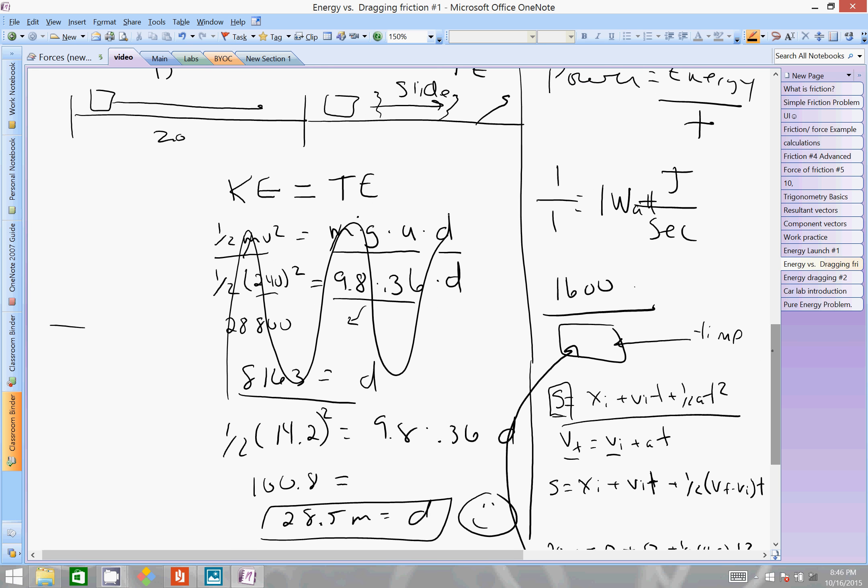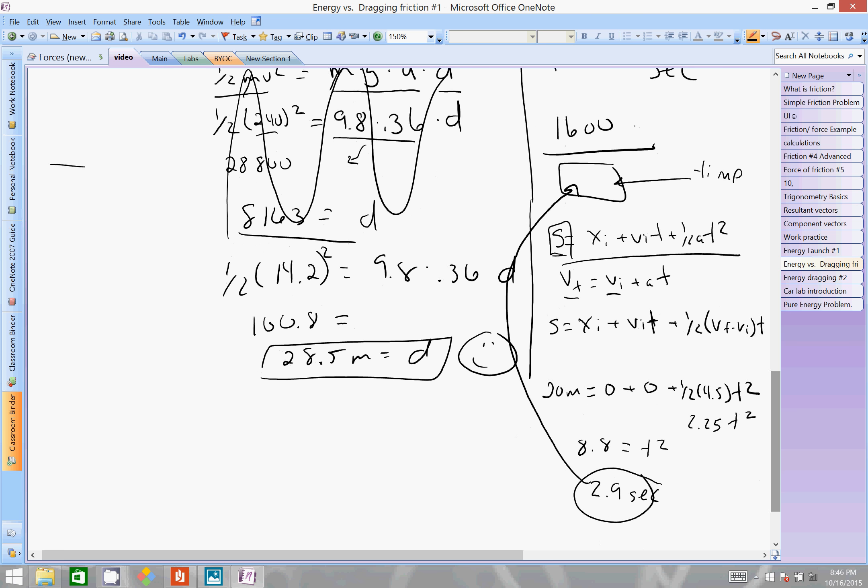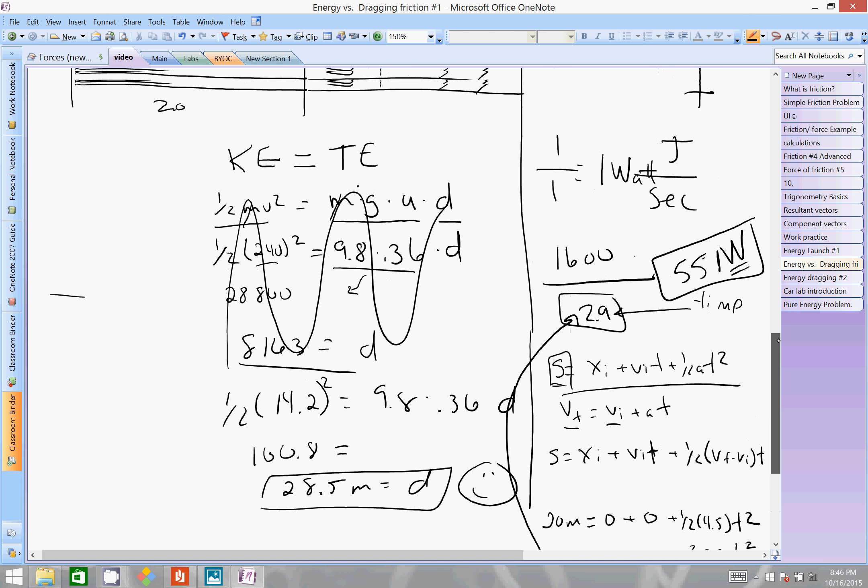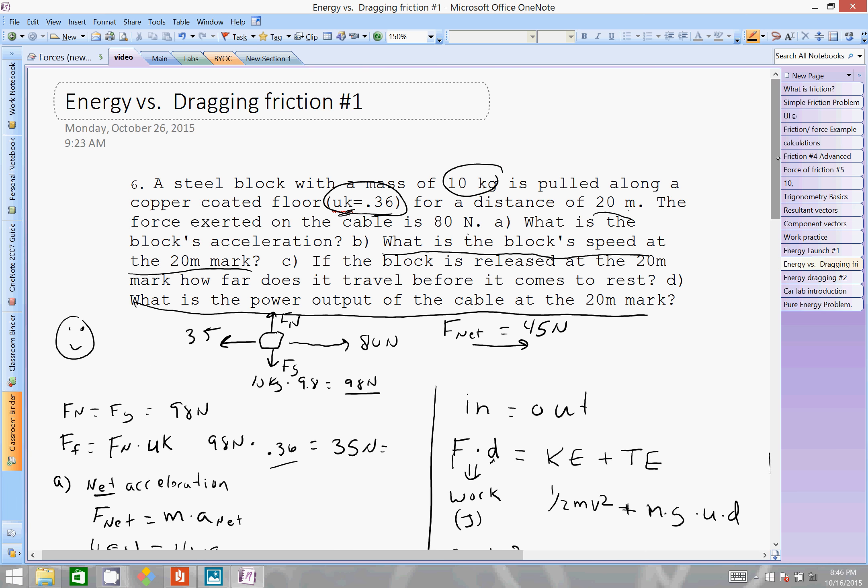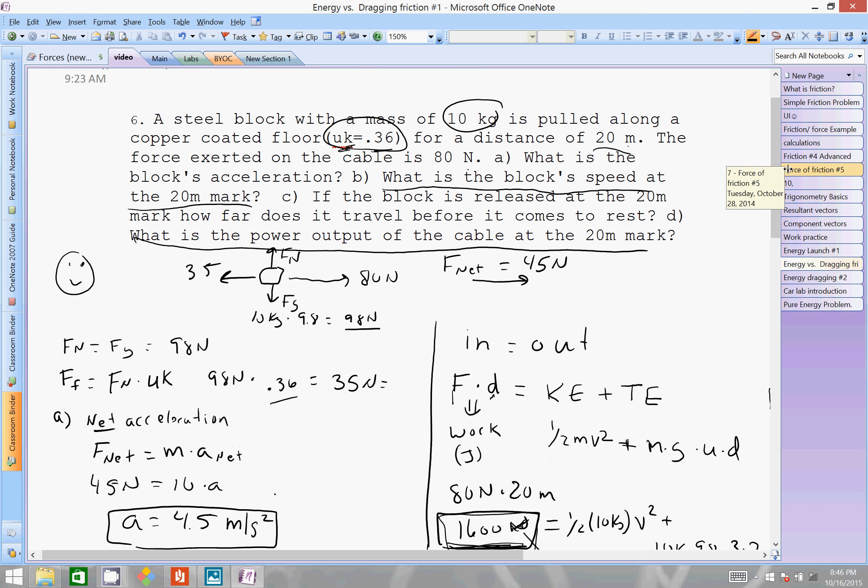Take that value. Plug it back into here and we get our power. Sixteen hundred joules divided by two point nine seconds is five hundred and fifty one watts. Large W stands for watts. Fairly in-depth problem. Good one covers pretty much just about everything you'd probably want on this section. Thank you.